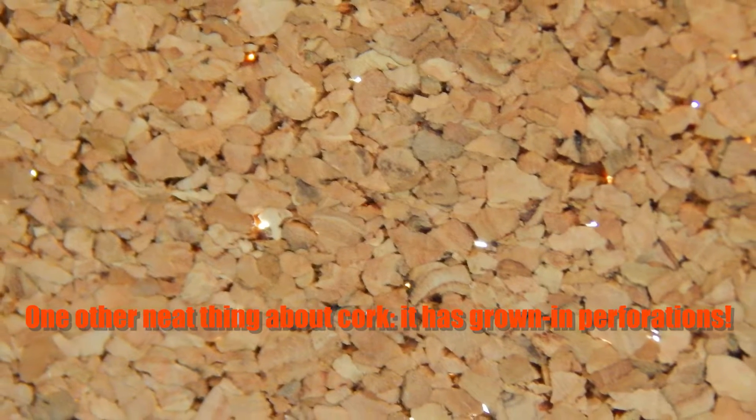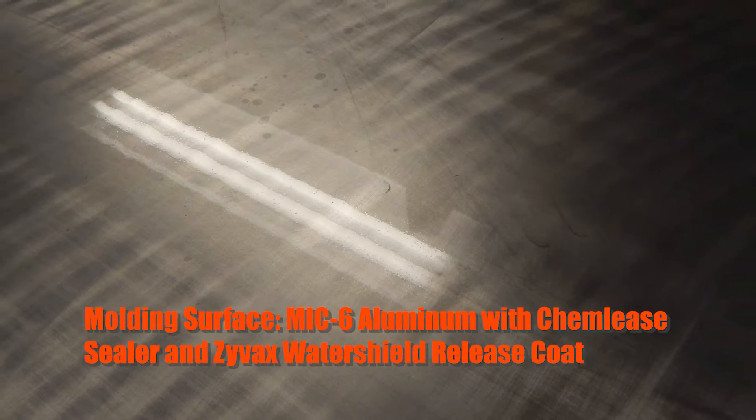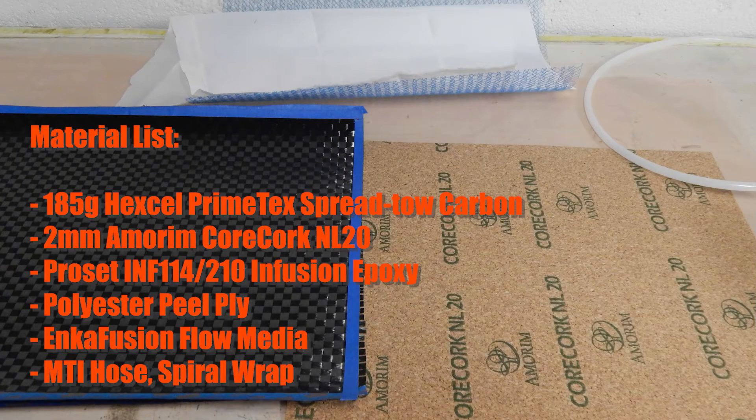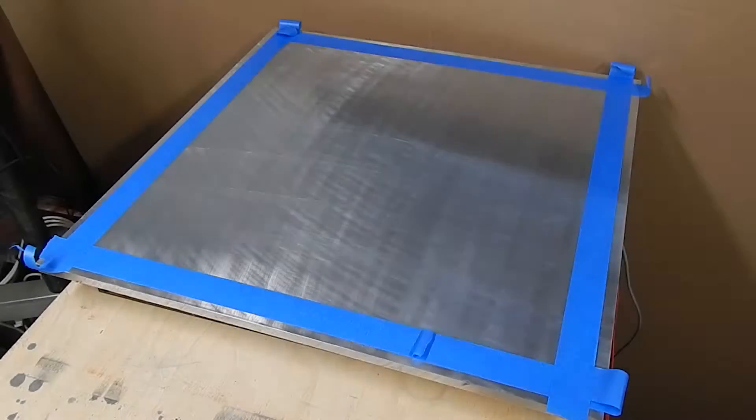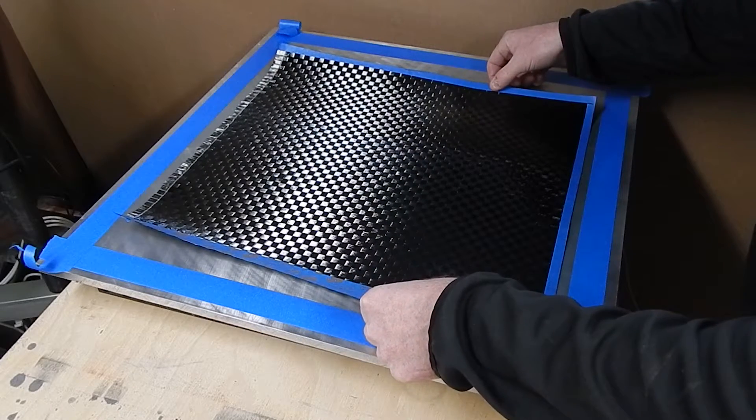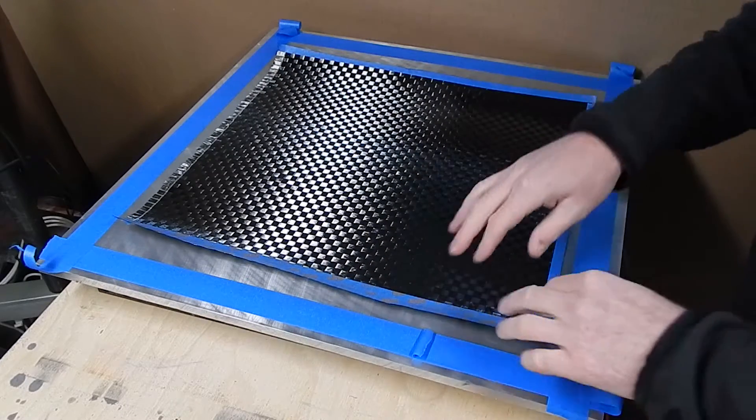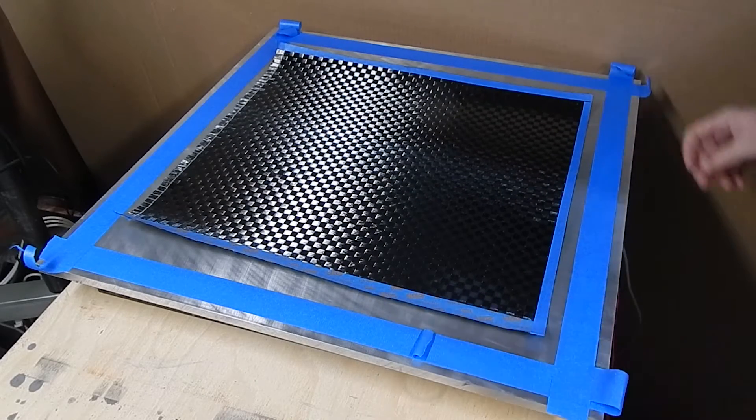One neat thing about it is that it comes with built-in perforations. So I'm going to lay up on this somewhat polished MIC 6 aluminum plate. I've put the masking tape around the outside to protect an area for the bag to land from the release, because this is such a shiny surface that the sealant tape won't stick unless it's left uncoated.